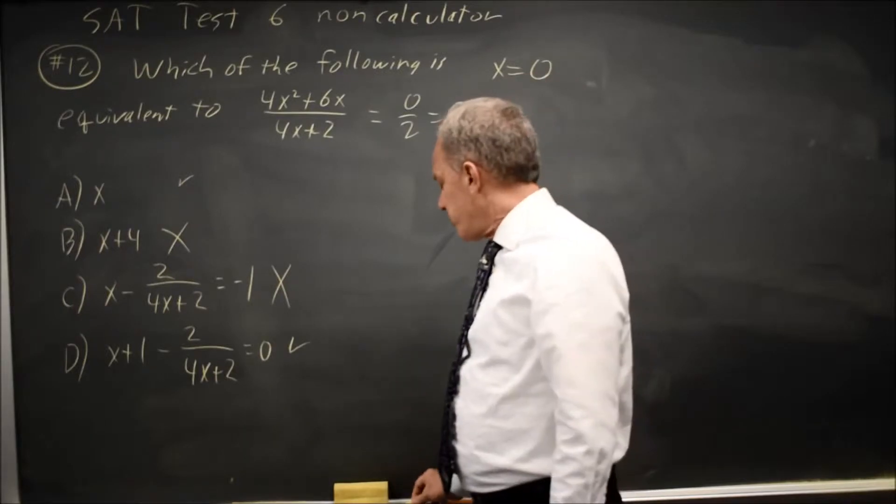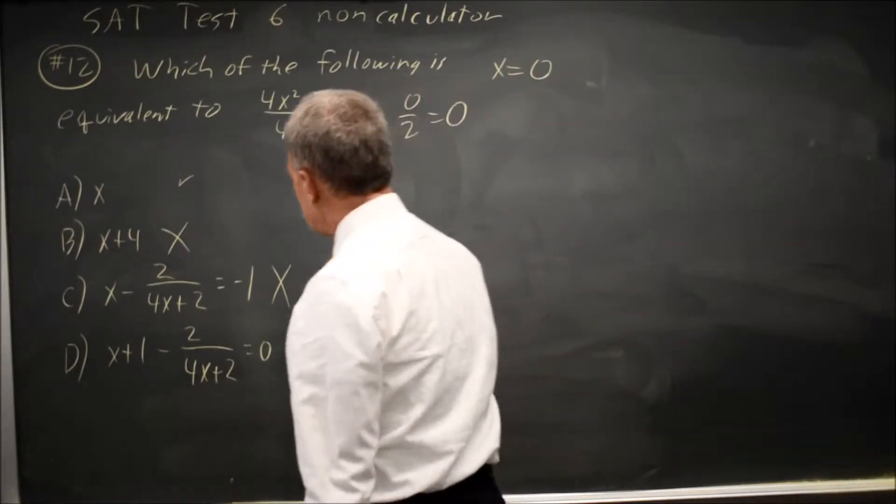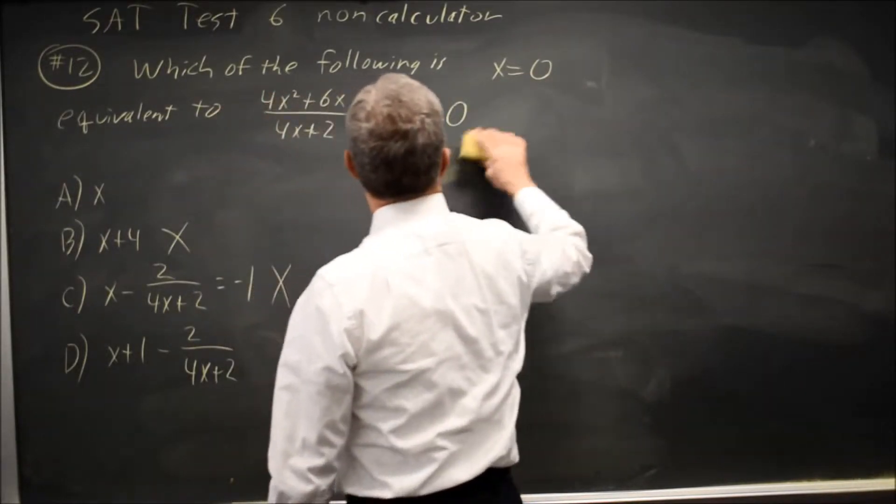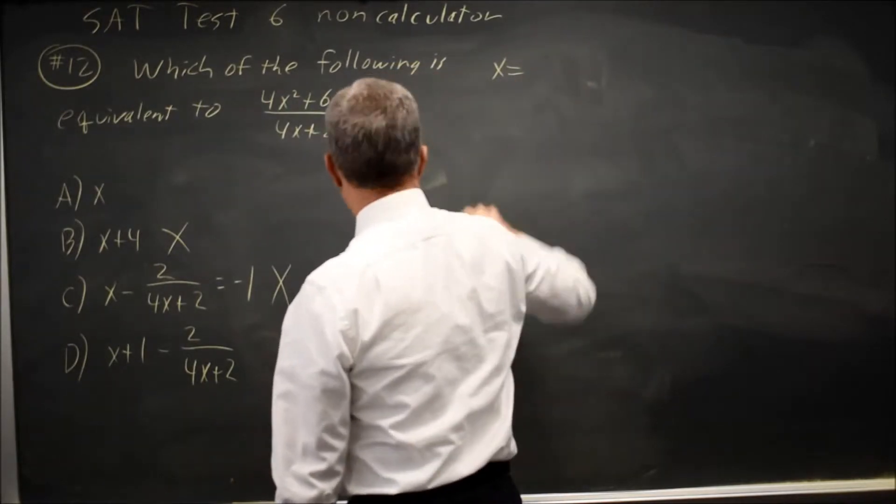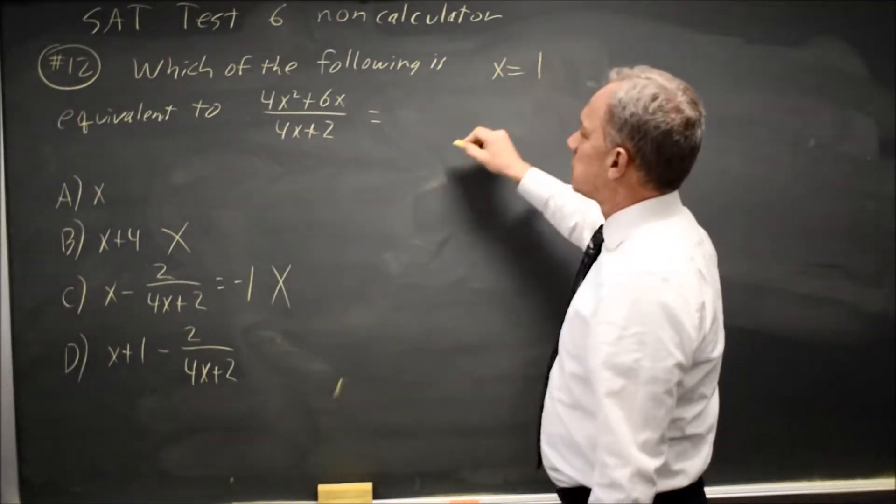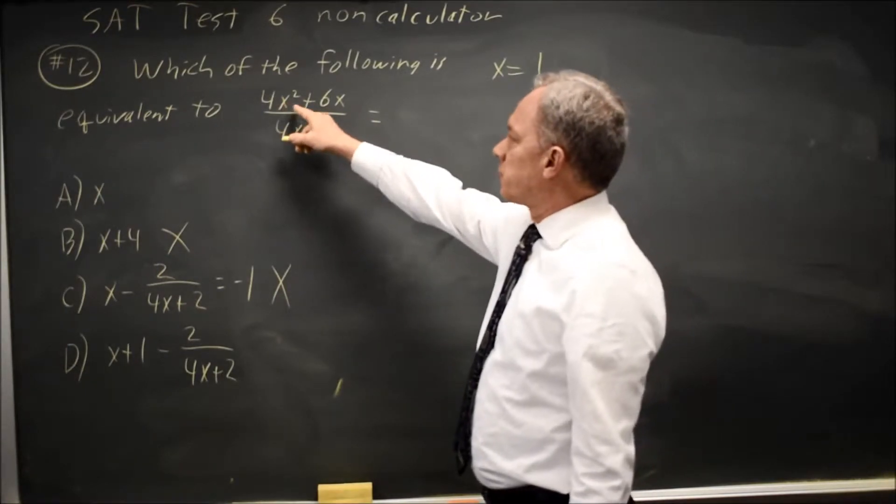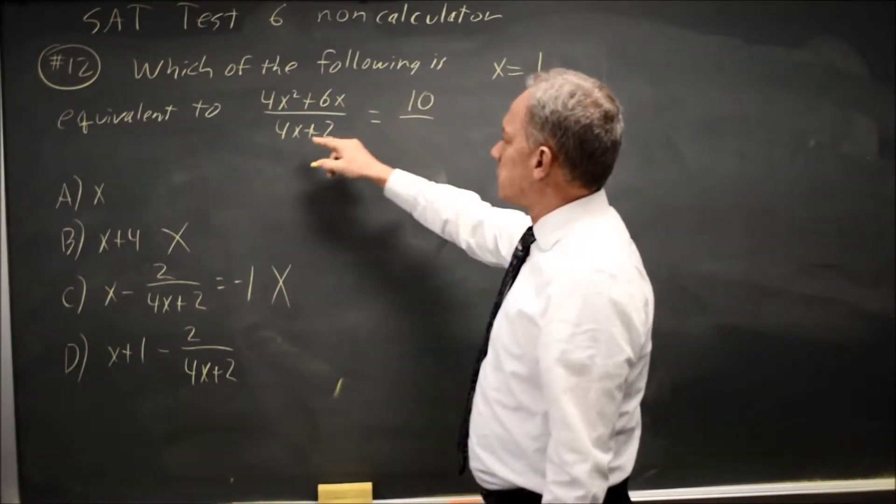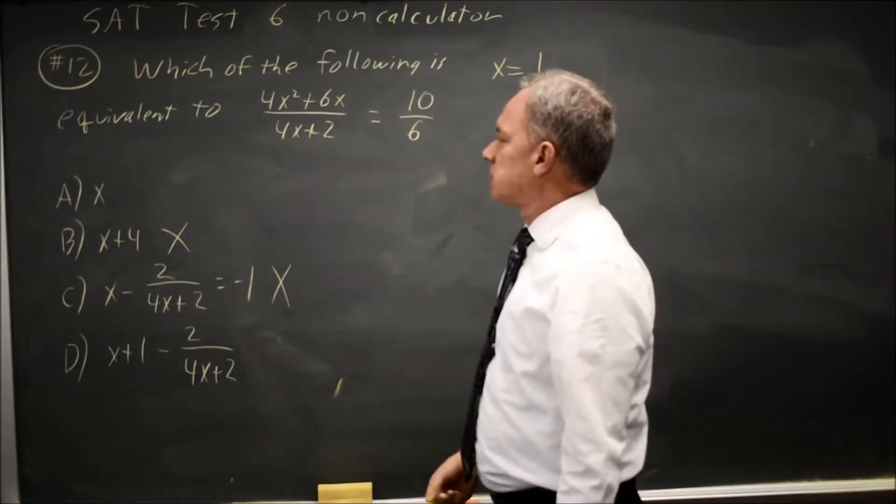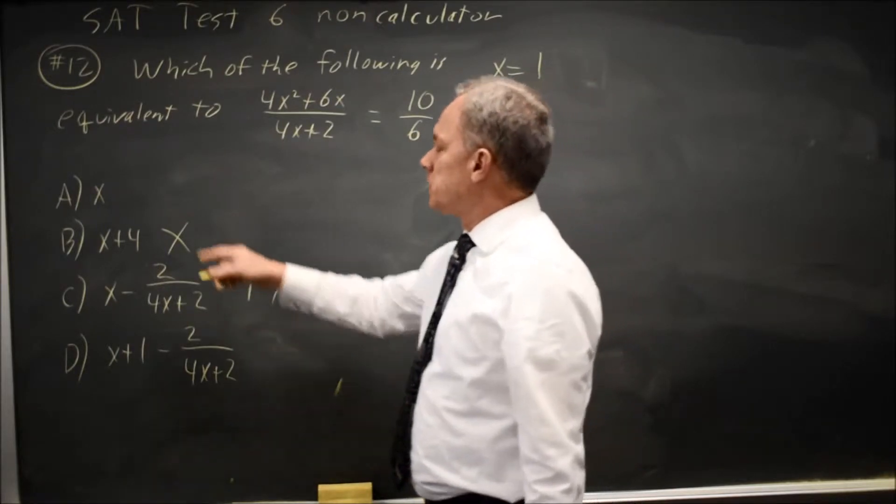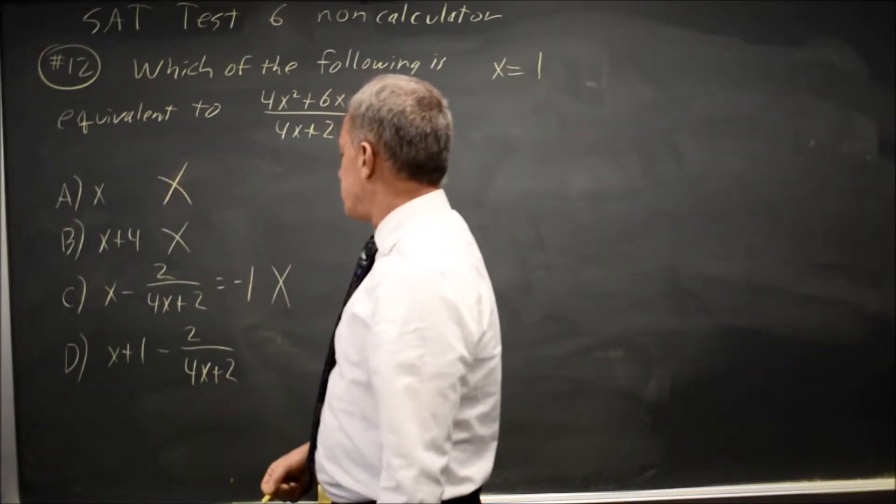Let's try one more value, and we're trying to decide between A and D. So how about x equals 1? Then my numerator here is 4 plus 6 is 10. My denominator is 4 plus 2 is 6. At x equals 1, choice A is 1, which is not 10 over 6.